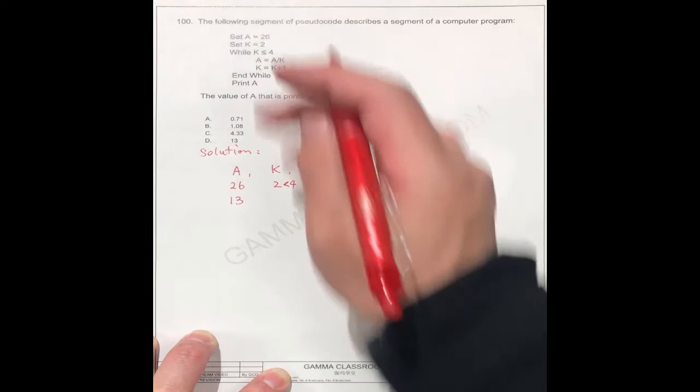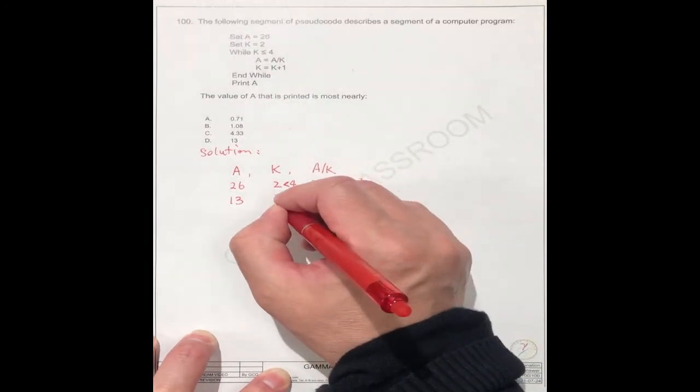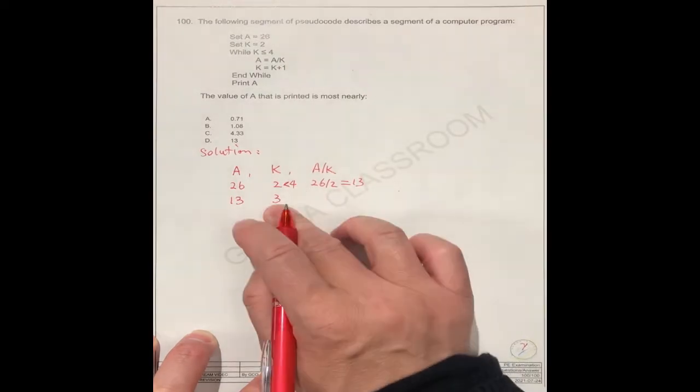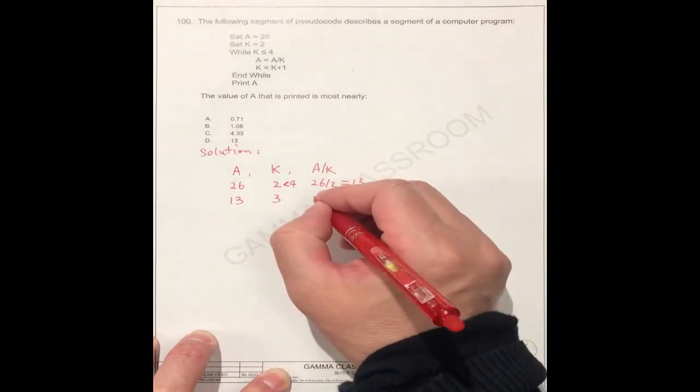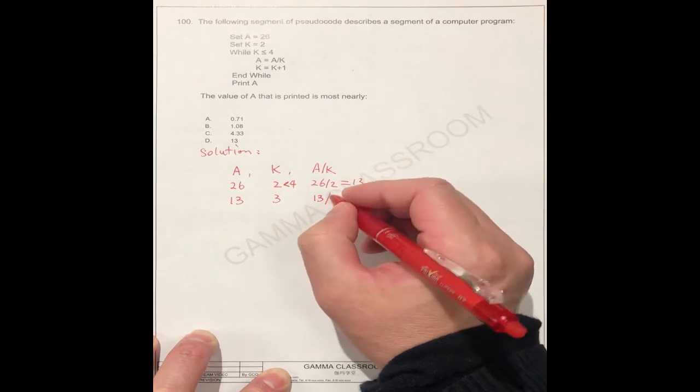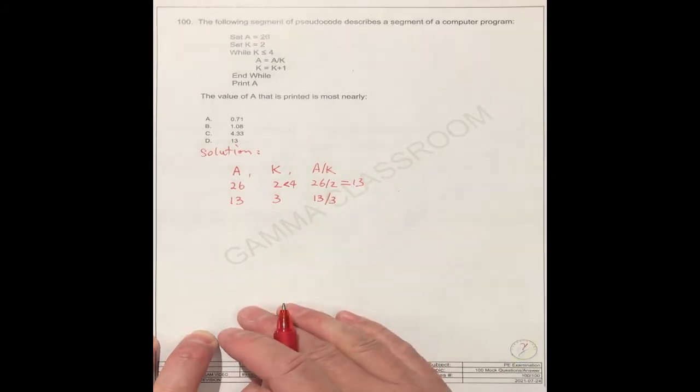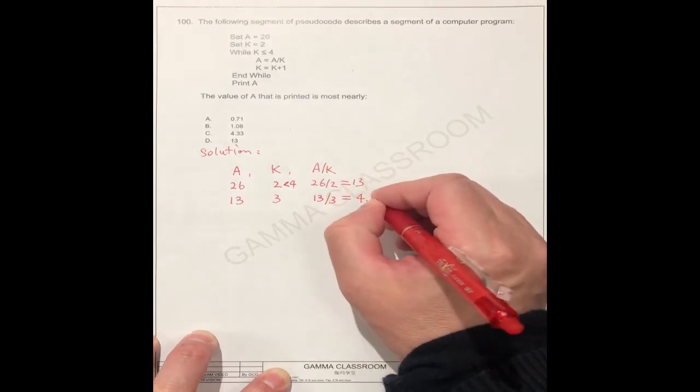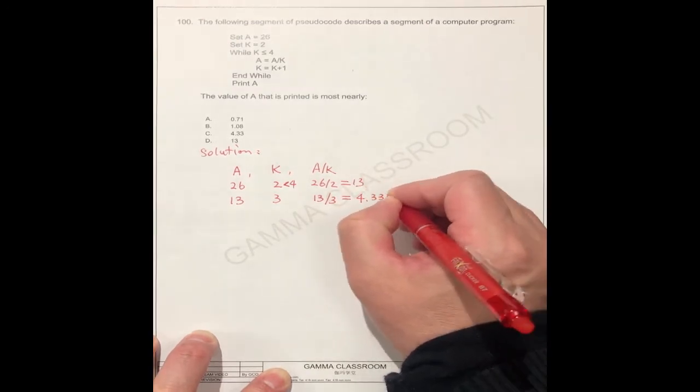13, and the k is 3, because k is equal to k plus 1, to 3. So here is 13 divided by 3, which is k, this is equal to 4.333.